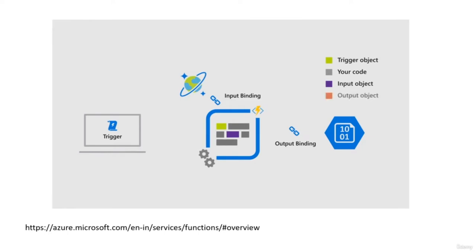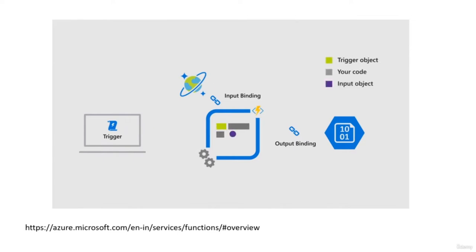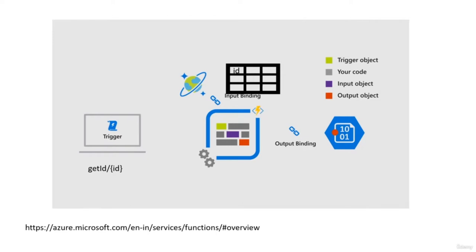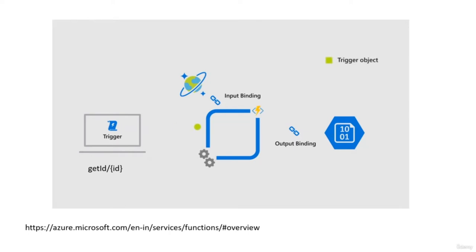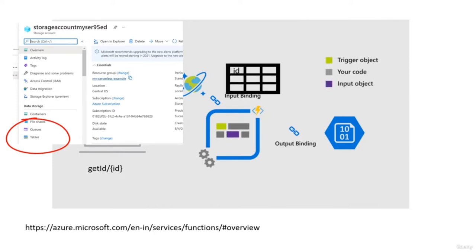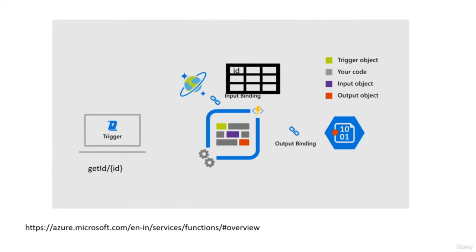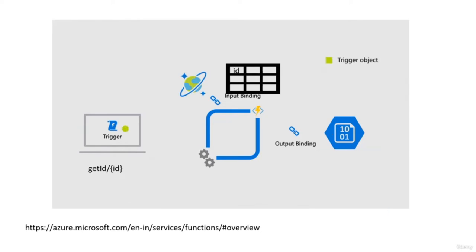For Azure Function architecture, there are three key terms: trigger, input binding, and output binding. The trigger causes the Azure function to execute. The input binding inserts input objects into the function, and the output binding sends data out. For example, an endpoint 'getID' could use a storage table as input binding to retrieve user information by ID, and return that information as JSON via HTTP response output binding.